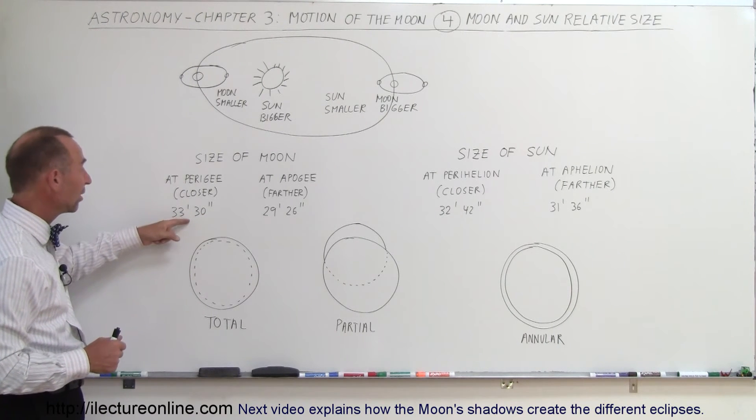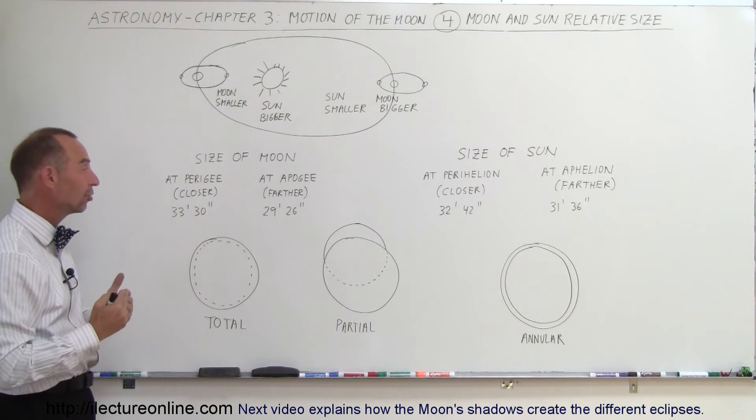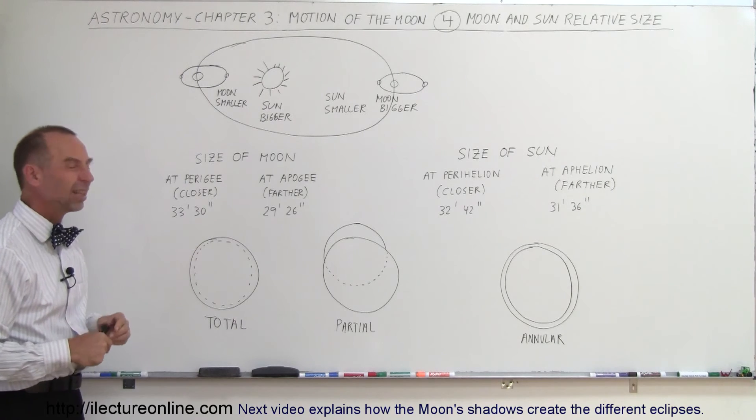Whenever we have a full Moon when it's like this, we call that a super Moon because the Moon does indeed look significantly larger to the eye than we normally can see that we're normally used to.